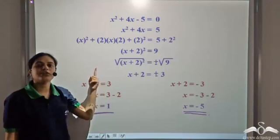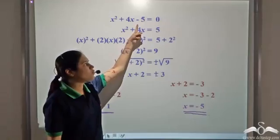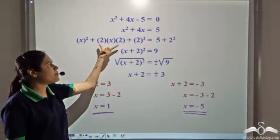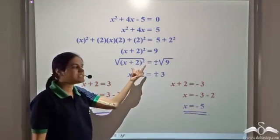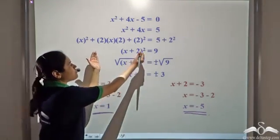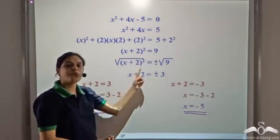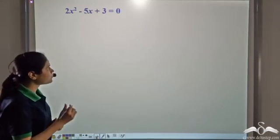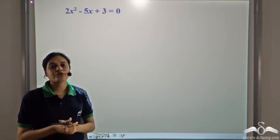This method is known as the method of completing the square. In this method we take the constant term to the right hand side, then form a perfect square on the left hand side, take the square root of both sides, and solve for x. This method is called completing the square because we form a complete perfect square on the left hand side. Now let us try and solve another equation by this method.